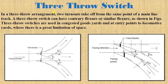Next is the three throw switch. In a three throw arrangement, two turn outs take off from the same point of the main line track — meaning the heel blocks are at the same point. We call this a three throw switch.